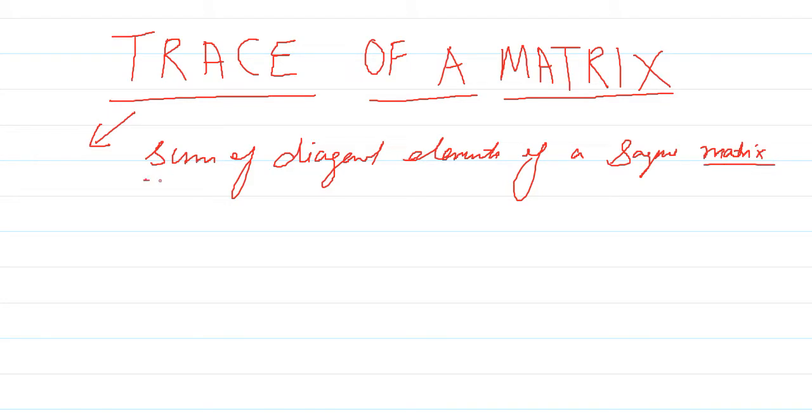Square matrix means where we have the same number of rows and columns. Where we have the same number of rows and columns, we call the matrix as a square matrix.